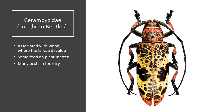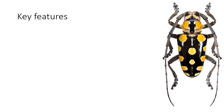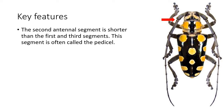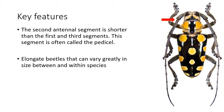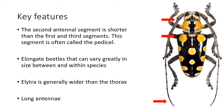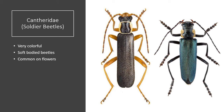The Cerambycids, or longhorn beetles, are another charismatic family of beetles. They're typically characterized by extremely long antennae, which are often as long or longer than the beetle's body. The scientific name of this beetle family goes back to a figure from Greek mythology: after an argument with nymphs, the shepherd Cerambus was transformed into a large beetle with horns. They're associated with wood where the larvae develop. Some feed on plant matter, and many are pests in the forestry industry, as they can destroy trees. Key features to identify Cerambycids are the antennae — the second antennae segment is shorter than the first and third segment. They're very elongate beetles, and the elytra is generally wider than the thorax.